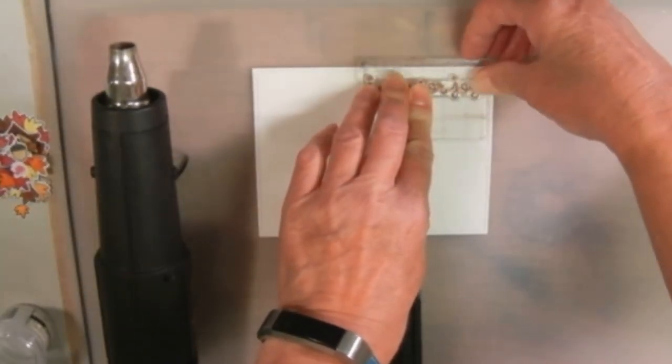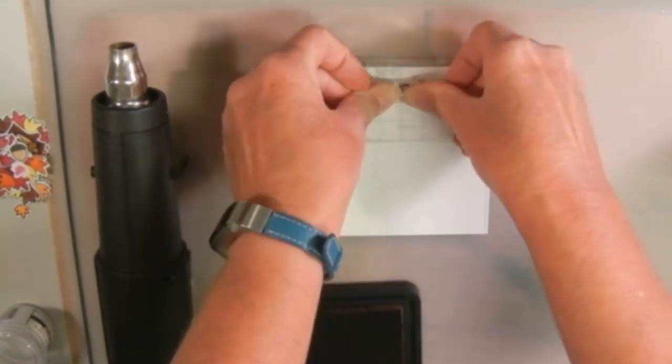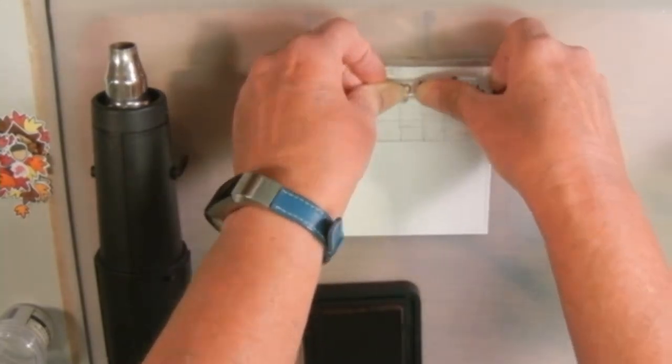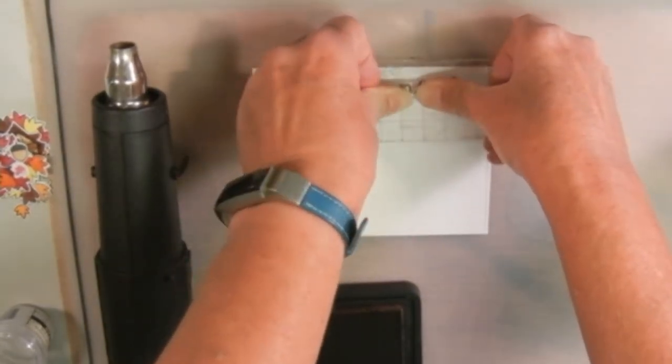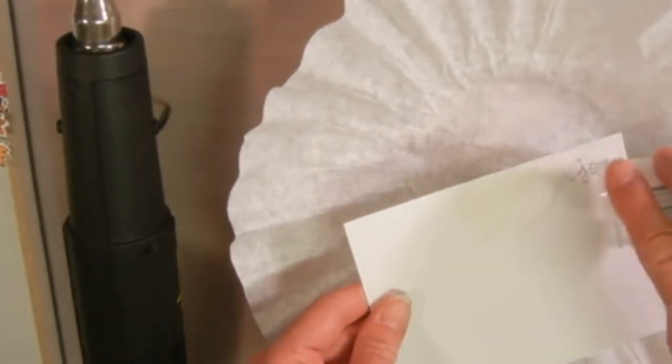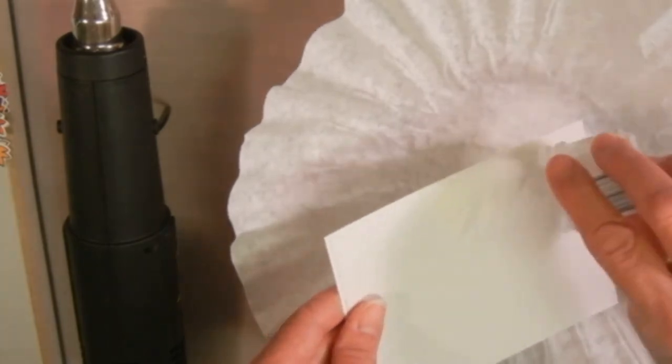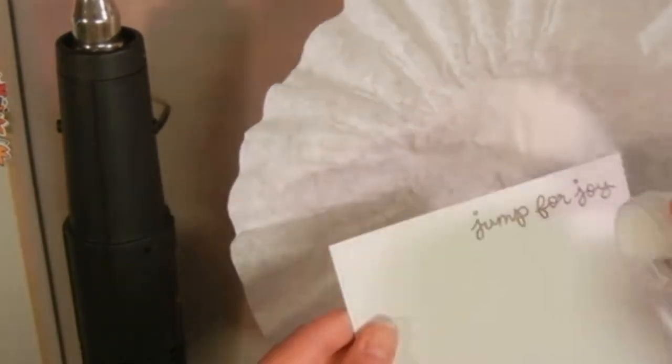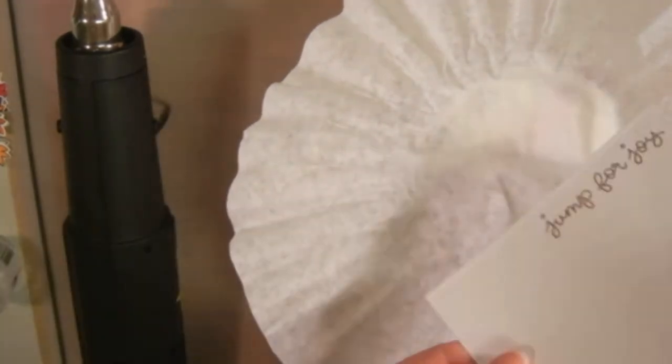Today I'm making a slider card with Lan Phan's Jump for Joy stamp set. I'm stamping Jump for Joy with some Vintage Photo Distress Ink because I'm going to emboss it and then I'm going to be doing some ink blending.